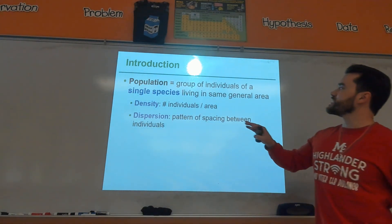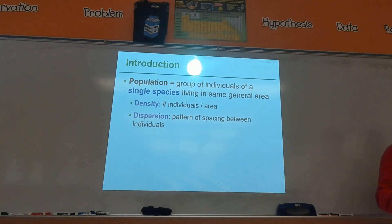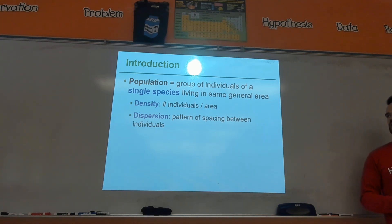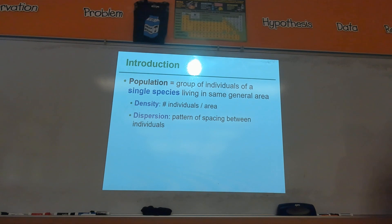A population is the same species living in the same general area — you define that area, so it depends on who the ecologist is and what they want to study. Within a population, they'll measure something called the density, which is similar to what you would see with your density formula — the number of individuals in a given area. Cities are very dense; there's a lot of people within a smaller area, while rural areas are not dense because not as many people live there.